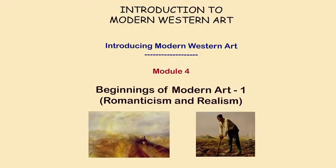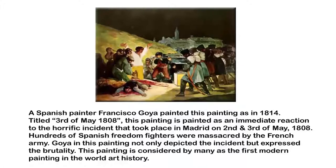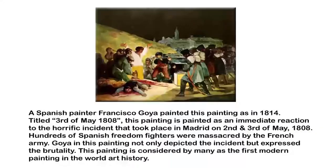One of those beginnings has been identified in the mid-19th century, around two very significant art movements called Romanticism and Realism. Before we discuss the characteristic pictures of Romanticism or Realism, let us begin by looking at one particular painting. This is a painting painted by a very famous painter called Francisco Goya. He painted this work in 1814.